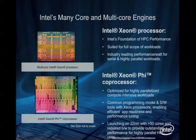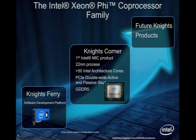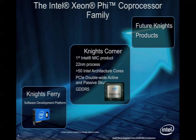22 nanometer is the same process that Ivy Bridge is coming out on, and Knights Corner is coming out on that process as well. We have greater than 50 cores, though we haven't announced exactly what our product SKUs will have. Knights Ferry was an early development platform with two SKUs — 30 and 32 cores — that's been well publicized. Knights Corner cards are PCI, double-wide, with GDDR. Future Knights refers to what might happen next.